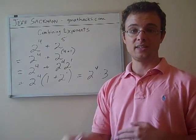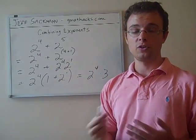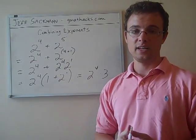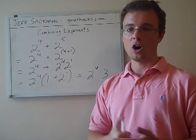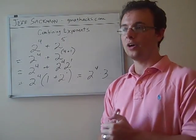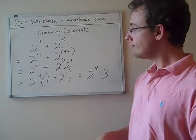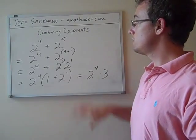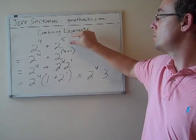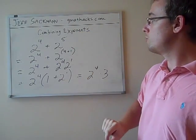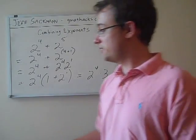It'll take practice to get a sense of when it's worth going through these steps. But this type of expression, 2 to the 4th plus 2 to the 5th, or x to the 6th plus x to the 9th, all sorts of things like that, comes up an awful lot on more difficult GMAT questions, and you need to be able to manipulate them in this way. So, take note of this. Practice these skills. Make sure you understand how to work backwards from 2 to the 5th to 2 to the 4th times 2 to the 1st.